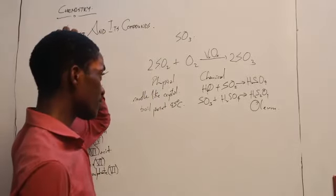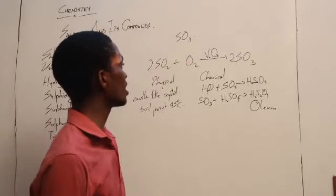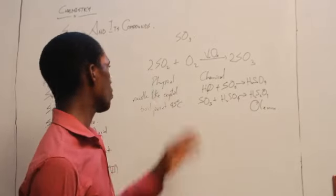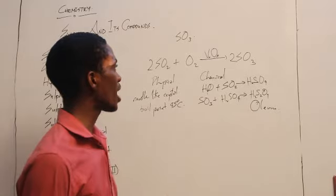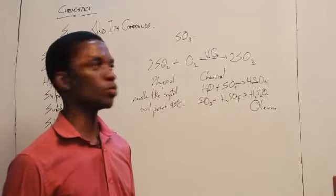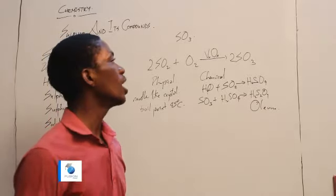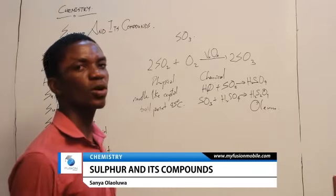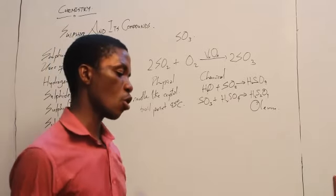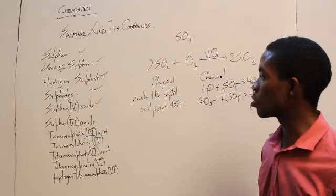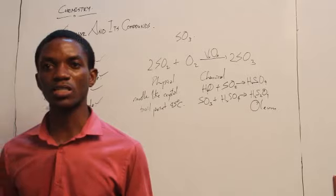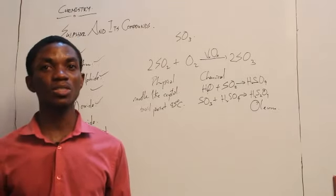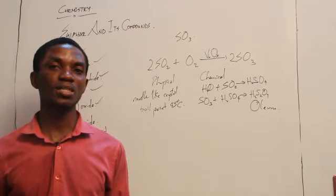SO3 is produced by adding oxygen to SO2, requiring vanadium 5-oxide as catalyst, low pressure, and high temperature. The uses of sulfur 6-oxide include making tetraoxosulfate 6-acid, serving in certain chemical reactions, and functioning as a bleaching agent.